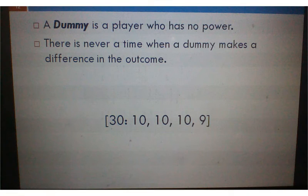A dummy is a player who has no power. And there's never a time when a dummy makes a difference in the outcome. Let's label these player 1, player 2, player 3, and player 4. So this motion can be passed with player 1, 2, and 3. They don't need player 4 to pass this.